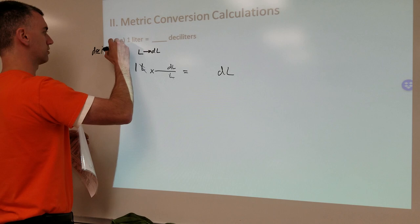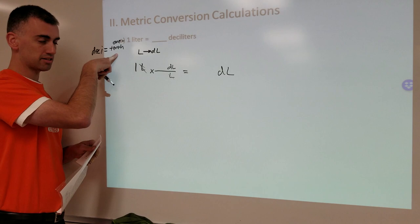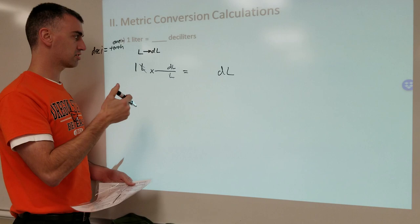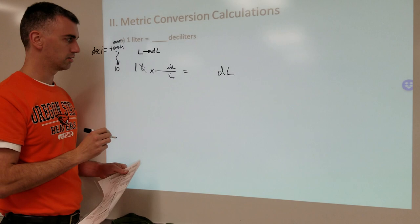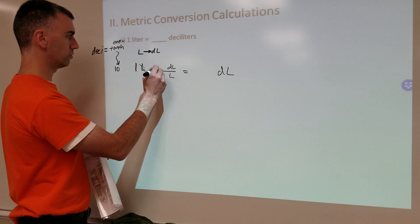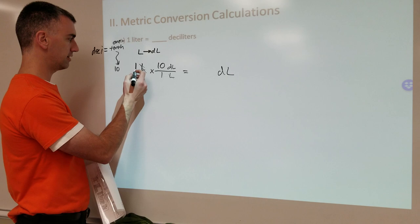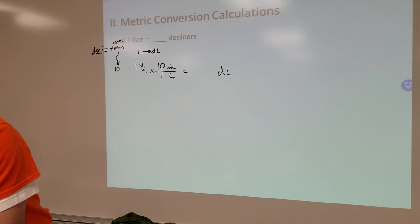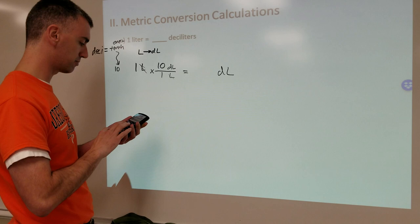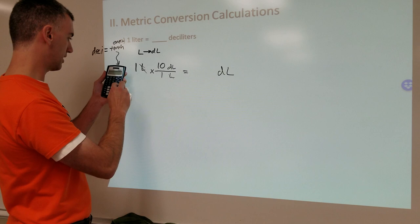If deci equals one tenth, that means the number 10 belongs in that fraction somewhere. My rule is: put the big number next to the small unit. Deci involves the number 10. Between the two, a full liter versus one tenth of a liter — a tenth of a liter is less than a liter, so the small unit is the deciliter. Big number 10 goes next to the small unit, and I just put a one in the other place. So: one times 10 divided by one — you don't even need a calculator for this one, but the process is what matters.